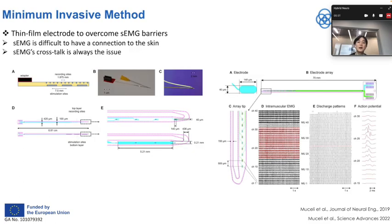The last interfacing approach is the minimally invasive method. This is a way to overcome the barriers that surface EMG has, such as maintaining a firm connection to the skin and crosstalk. Since this thin-film electrode is inserted just beneath the skin, it can mitigate those issues that surface EMG has.